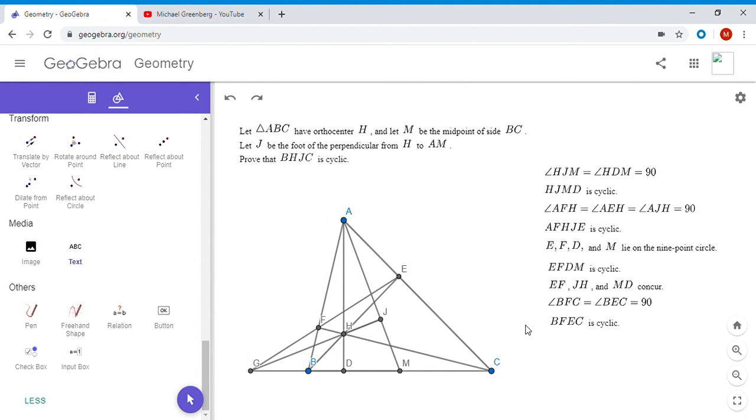We can use power of a point a couple of times. Ultimately we want to show BHJC is cyclic, and so my strategy is to use power of a point to show that. I want to show that GH times GJ equals GB times GC. Maybe I should have stated up front earlier on that that was kind of my plan all along - to show that BHJC is cyclic by using power of a point. That's kind of why I did all this stuff to get to point G.